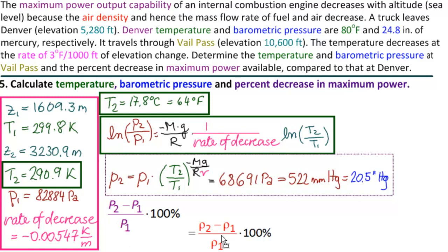The percent decrease in power is the same as the percent decrease in air density. So instead of P2 and P1, we put in row 2 and row 1. And we know how to calculate row from P and T. So what do we get? Row 1 equals P1 M over R T1.